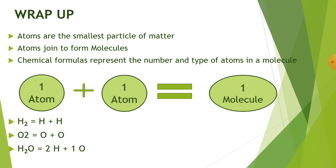Let's wrap up today's lesson. So, we have studied that atoms are the smallest particle of matter. And atoms want to become stable. So, they join with other atoms and they form molecules. The chemical formulas represent the number and type of atoms in a molecule. One atom plus one atom forms one molecule.